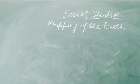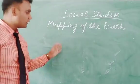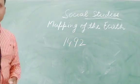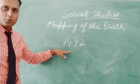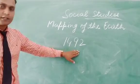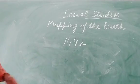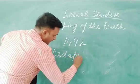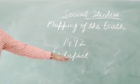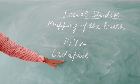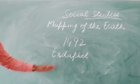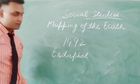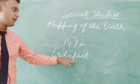The year of invention of the oldest globe was 1492. The oldest surviving globe was invented in 1492, and the name of that globe was Erdapfel. We can pronounce it as Erdapfel. The exact pronunciation of this word is Erdapfel.